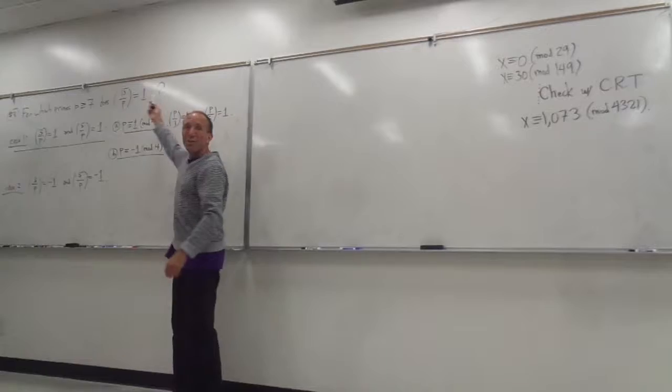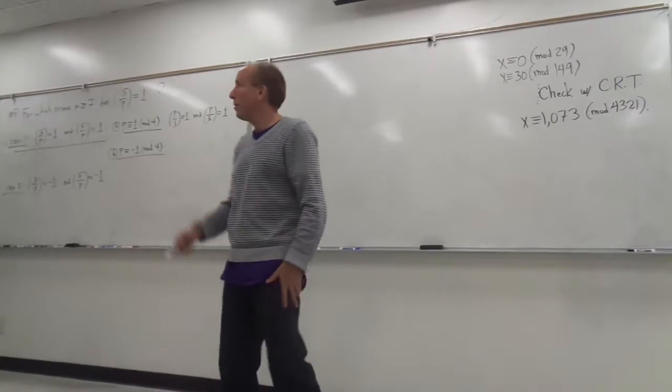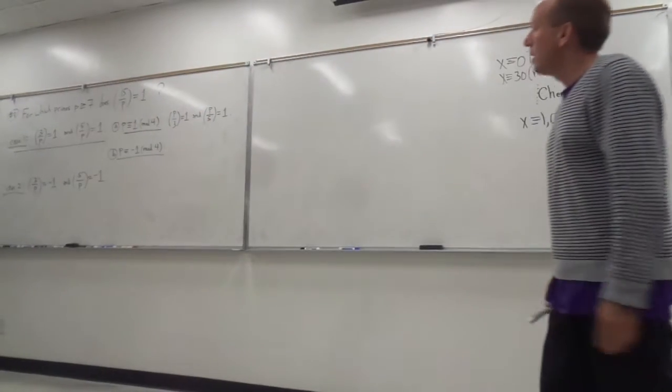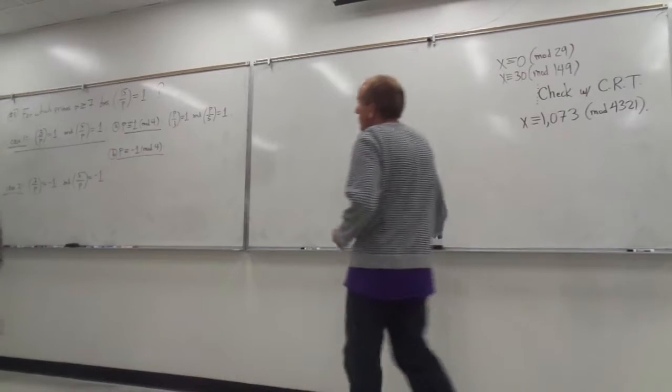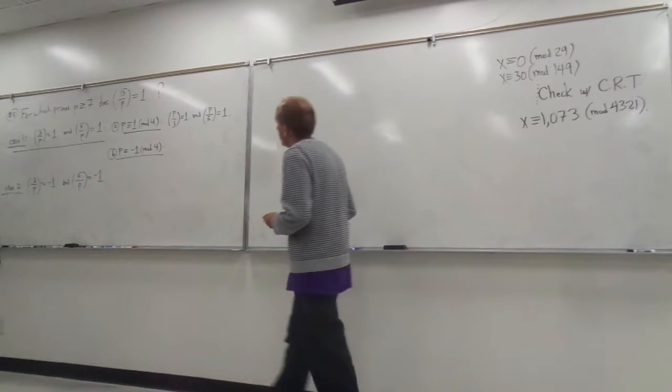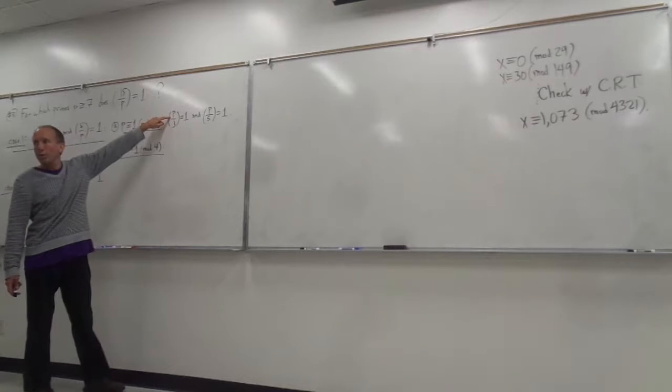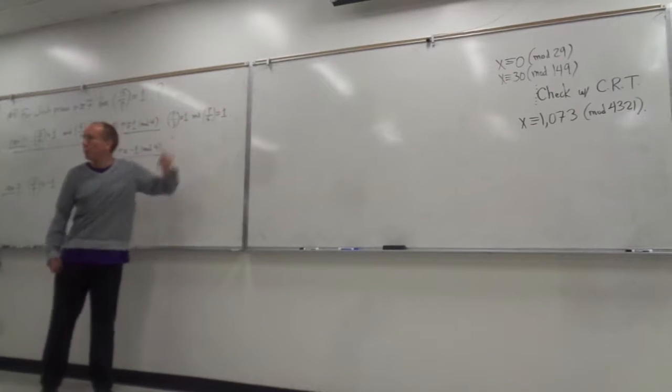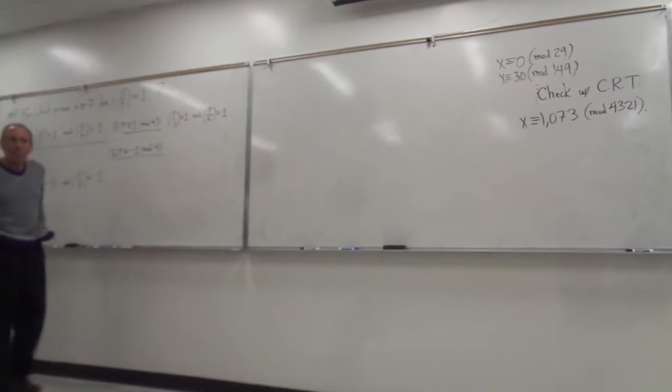So in the first case, p congruent to 1 mod 4, I can flip the thing over. The question is, for which primes is this true, and for which primes is this true? That's kind of what we're asking.